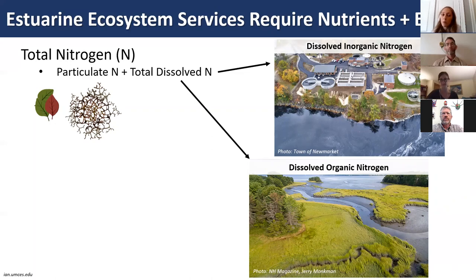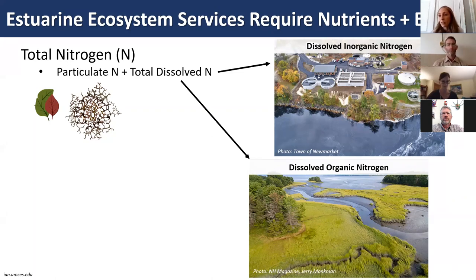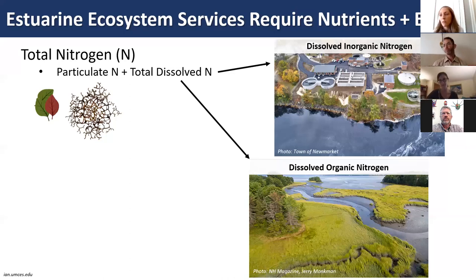Particulate nitrogen is any material retained on a filter, while dissolved nitrogen is anything that passes through. Examples of particulate nitrogen include detritus from leaf litter or decomposing macroalgae. The dissolved nitrogen pool can be further broken down into dissolved inorganic nitrogen—often anthropogenically sourced from wastewater treatment effluent or septic drainage—and dissolved organic nitrogen, which is most often naturally sourced from wetlands.